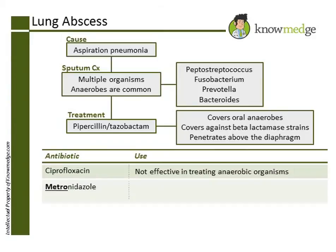Choice B: Metronidazole is effective in treating anaerobes, but a rule of thumb is that it usually works against anaerobes below the diaphragm. A helpful mnemonic — like a subway metro functions below the ground — metronidazole acts below the diaphragm. When the anaerobes are above the diaphragm, clindamycin or agents like piperacillin-tazobactam work against the beta-lactamase-producing strains of anaerobes.